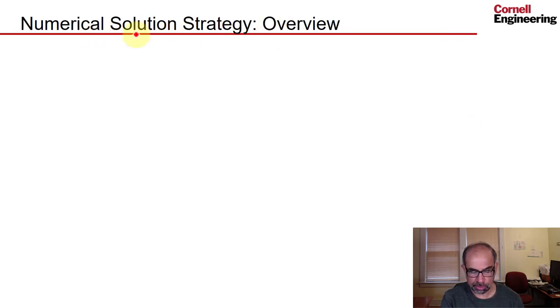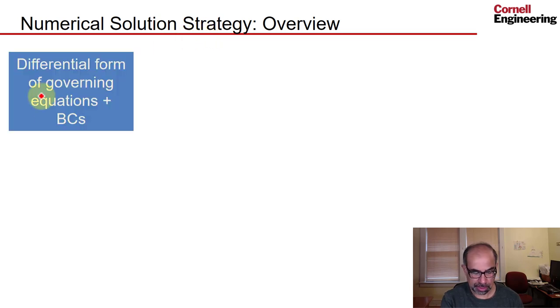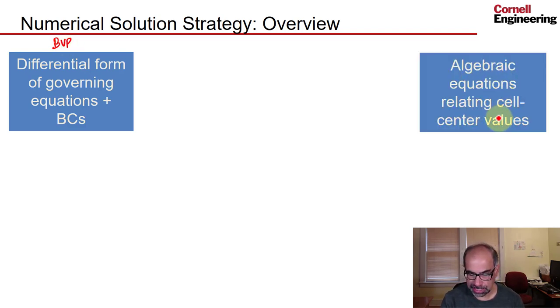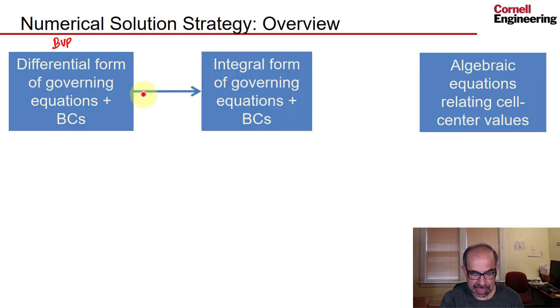So here is an overview of the numerical solution strategy. The starting point is the mathematical model, the boundary value problem, the differential form of governing equations plus boundary conditions. And we need to derive algebraic equations relating cell center values, which you can think of as algebraic statements of conservation, mass conservation and F equals ma. And in the finite volume method, you go over to the integral form of the governing equations plus boundary conditions. So once you go to the integral form, you apply it to each control volume or cell, and you can derive the algebraic equations. And in the process, you introduce an error, which is called the discretization error. And intuitively, you can probably see that you can decrease the discretization error by increasing the number of cells, which is called mesh refinement.